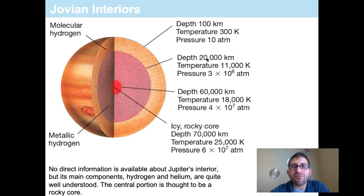As we go even further down to a depth of 60,000 kilometers, its temperature reaches 18,000 Kelvin, and its pressure now is 4 times 10 to the 7th, or 40 million atmospheres of pressure on Earth. So, pretty high pressures here. And as we get to the very center, we've got an icy or rocky core with a depth of about 70,000 kilometers and a temperature of 25,000 Kelvin. And this is the surface temperature of some of the brightest stars.